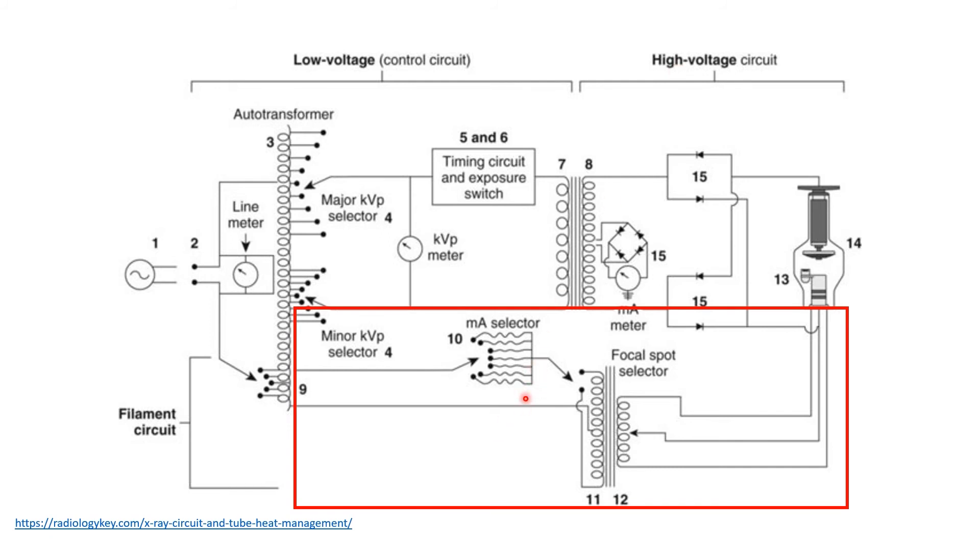The sub-circuit begins at the secondary side of the auto transformer, and the current flows from the auto transformer through the MA selector up to the primary side of the step-down transformer, and back of course to the auto transformer.